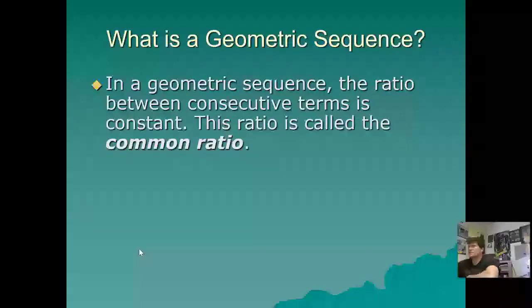What is a geometric sequence? In a geometric sequence, the ratio between consecutive terms is constant. That's why it's called the common ratio. Basically, the pattern that follows this list of numbers is multiplying or dividing.